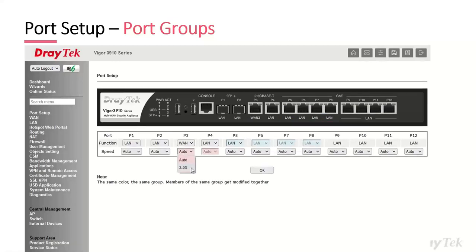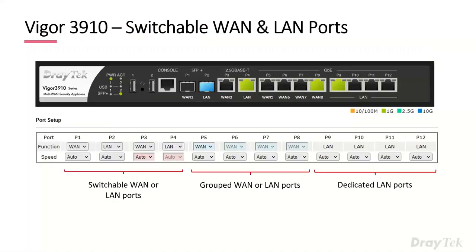The 2.5 gig ports are set to auto by default — you don't need to change this, as auto-negotiate should work. But if there's a negotiation issue and the connected device needs to be fixed at 2.5, you can set that. To recap: the first four ports are individually switchable as LAN or WAN, the next four are grouped, and the last four are dedicated LAN only — giving a total of eight WAN ports, six of which are RJ45.